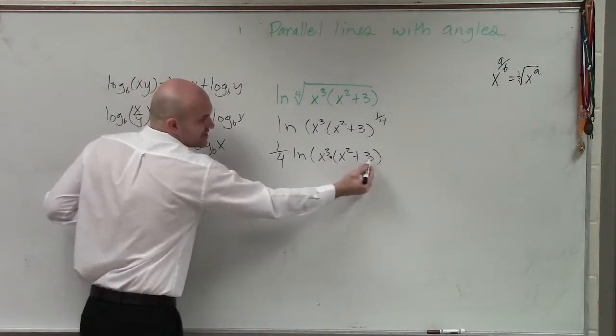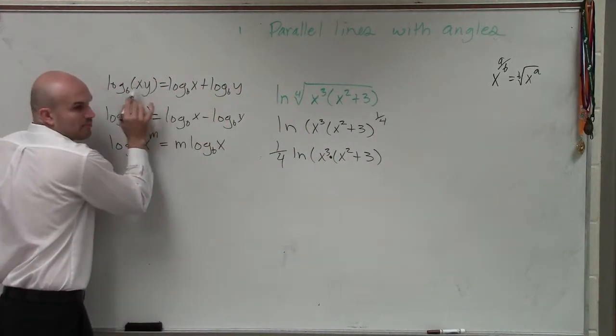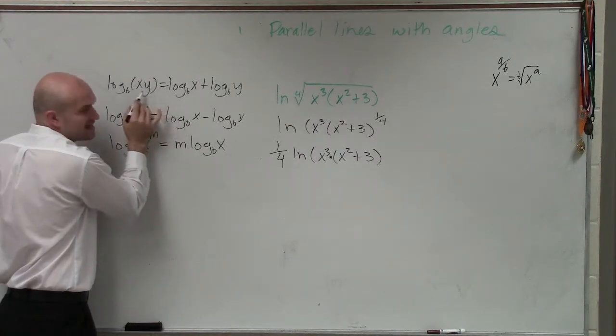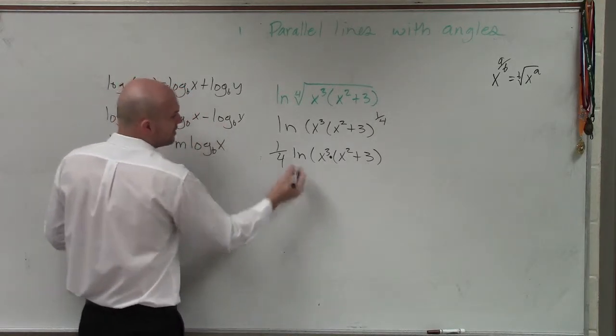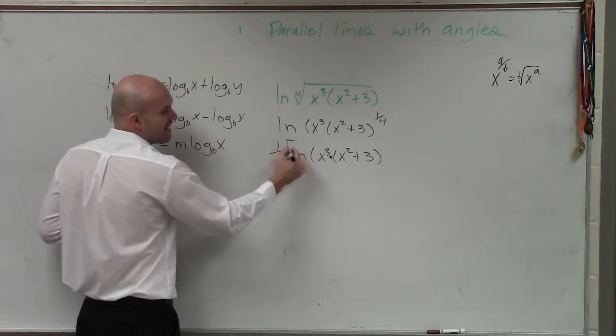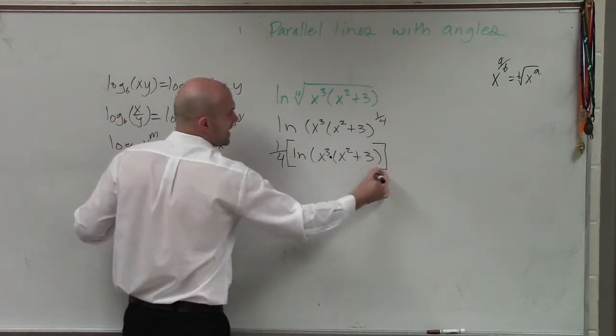Right? This x cubed is times the x squared plus 3, just like you have a product here. I know it's not as simple as x and y, but this is a product between this monomial and the binomial. So therefore, we need to make sure that we understand this one-fourth is being multiplied by everything.